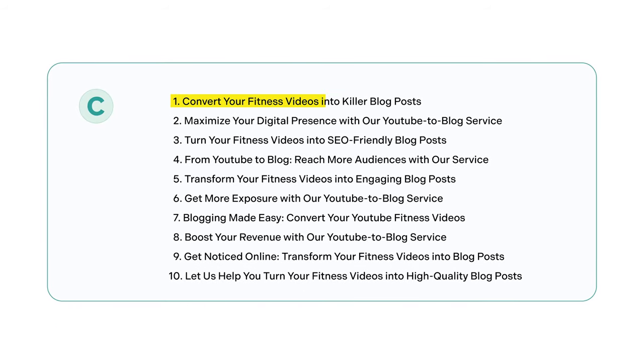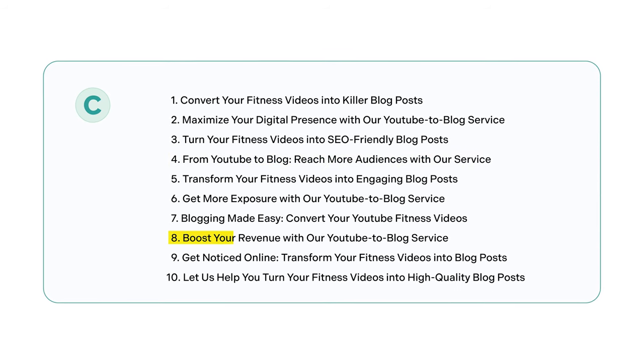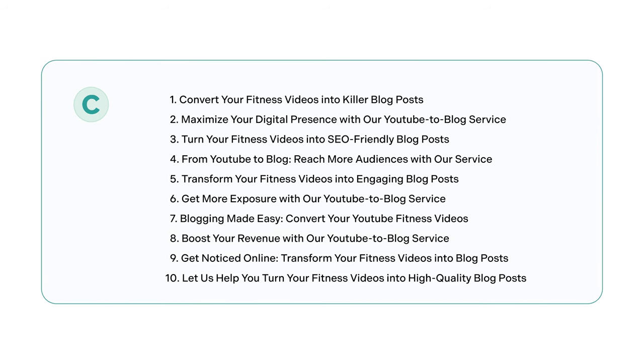We have things like 'Convert your fitness videos into killer blog posts,' 'From YouTube video to blog — reach more audience with our services' — okay, that one's all right, not too great. 'Boost your revenue with our YouTube to blog service' — that's interesting, that might get someone to open it. Basically, you want to get the ideas, pick the best ones, massage it a little bit, change it up to make it more human. Then you can put it back into the prompt and say 'I like this subject line, can you create five different variations?' — so now you're getting variations of the one you want, and you can A/B test to see which one works best. It saves you time; you don't have to sit down and come up with 10 subject lines yourself. You pull from this data set, see what's good, learn how to curate, and use the AI to speed up the process.